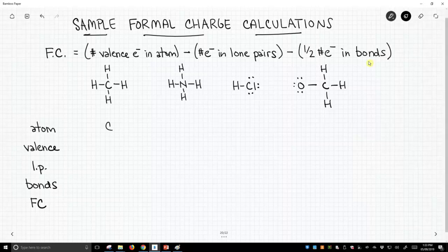So for our first molecule, methane, we have a carbon. Carbon should have four valence electrons. It's in group number four. This particular structure has no lone pairs, and it has four bonds. So the number of bonds has eight electrons. One half of eight equals four. So four take away zero take away four is formal charge is zero, and indeed that carbon has a formal charge of zero.